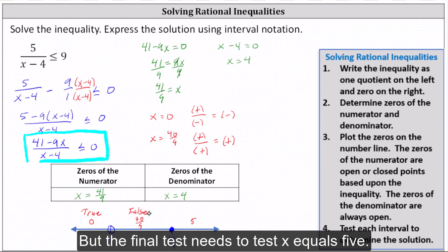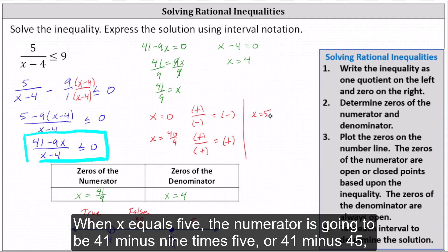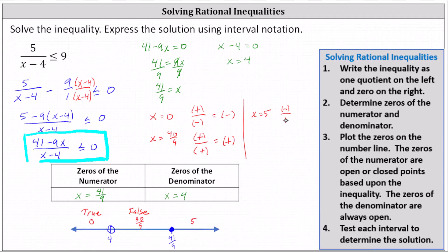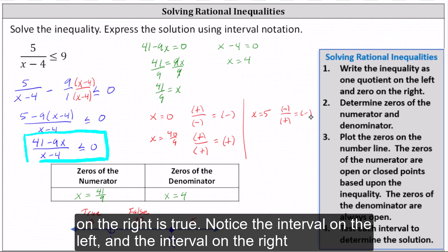For the final test, we test x equals five. The numerator is 41 minus nine times five, or 41 minus 45, which is negative. The denominator is five minus four, which is positive. A negative divided by a positive is negative, and a negative value is always less than or equal to zero. Therefore, the interval on the right is true.